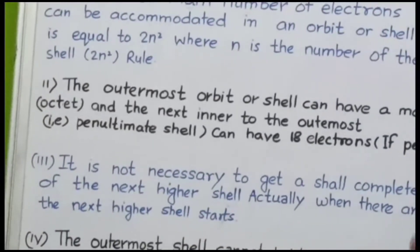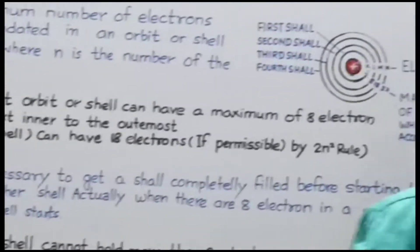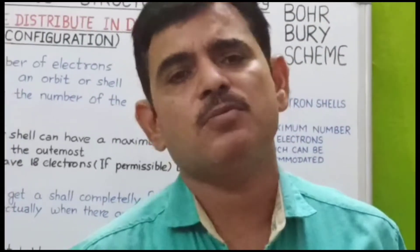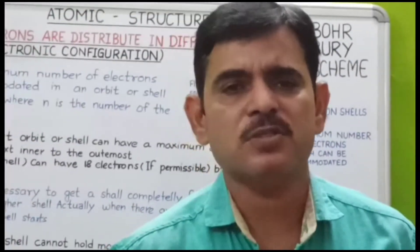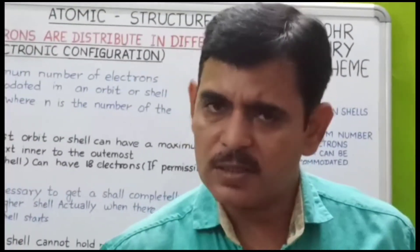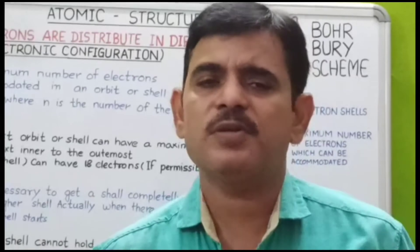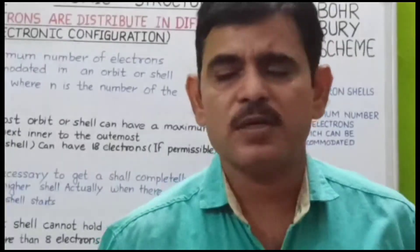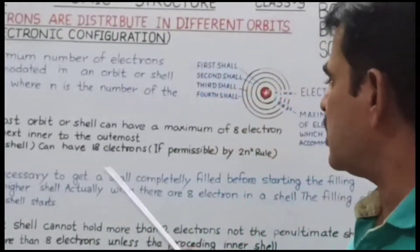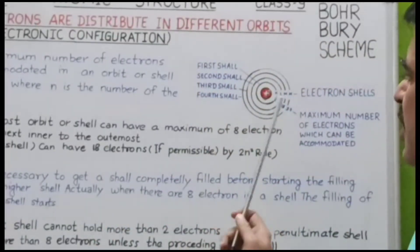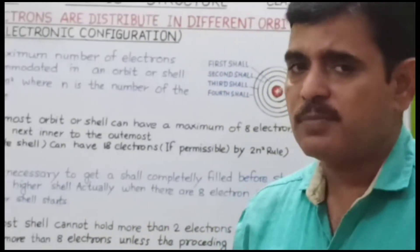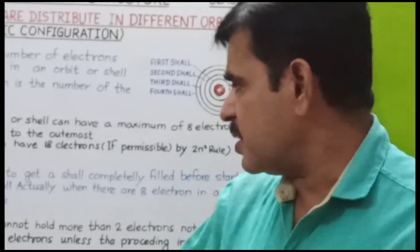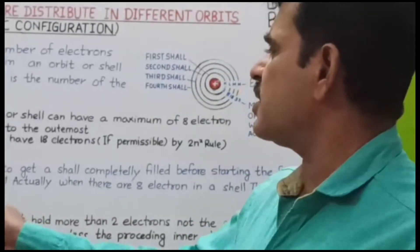Octet number of electrons वाली electronic configuration noble gases में होती है। Noble gases अपने octet number of electrons को पूरा करती हैं। इसी आधार पर octet rule काम करता है — यह Bohr के नियम से fit बैठता है।